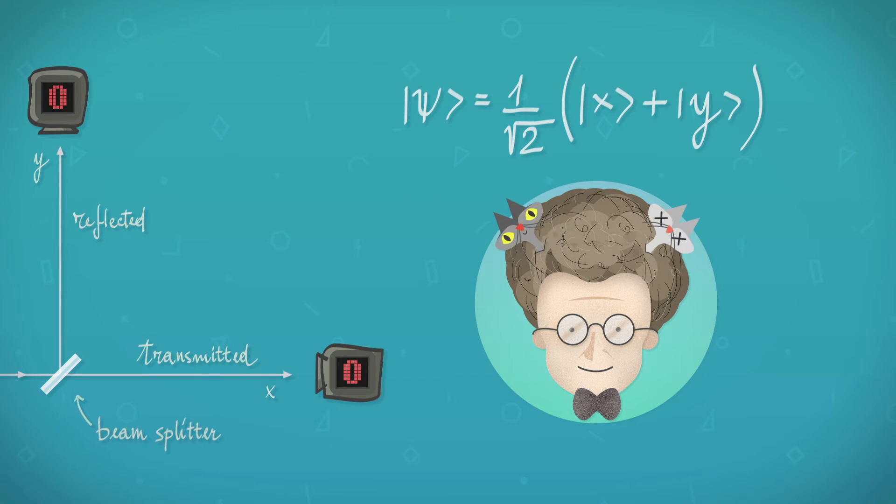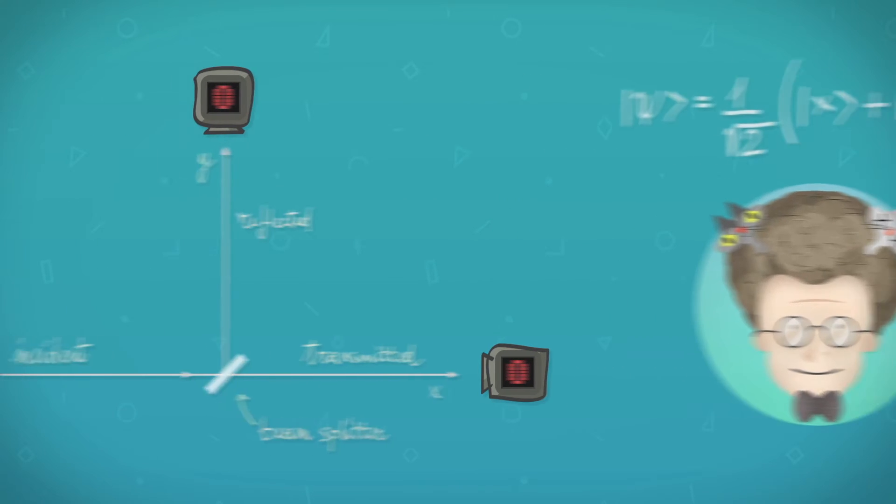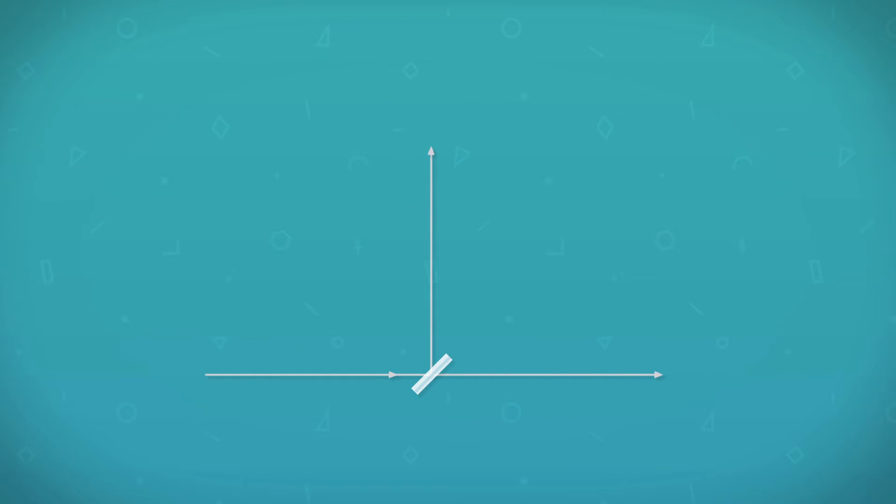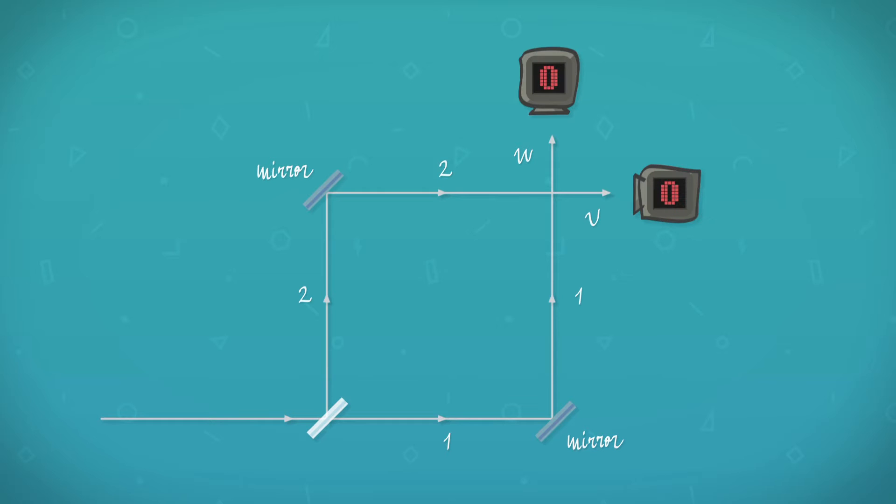This is counter-intuitive, so we want to prove that it is actually the case. For that, we interfere the paths. We bring them together again, passing through another half silver glass.